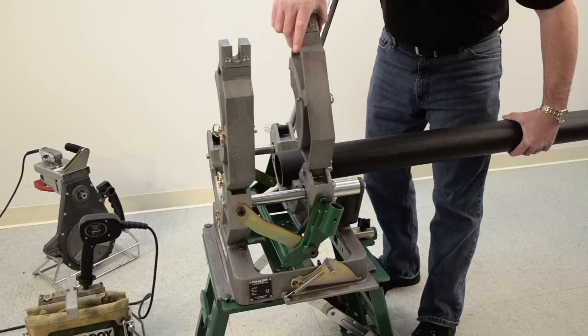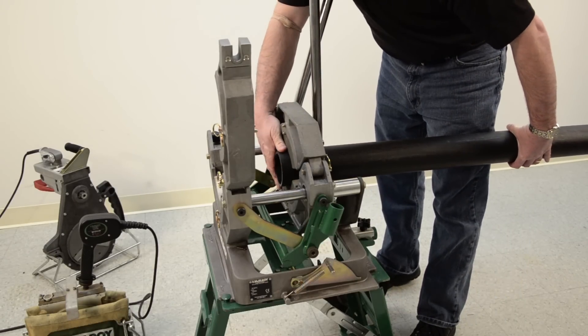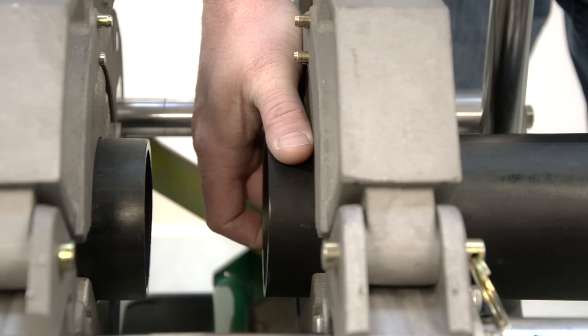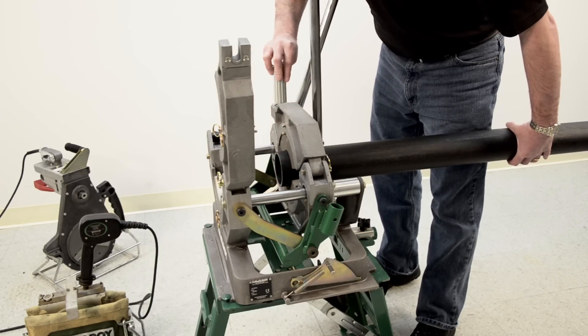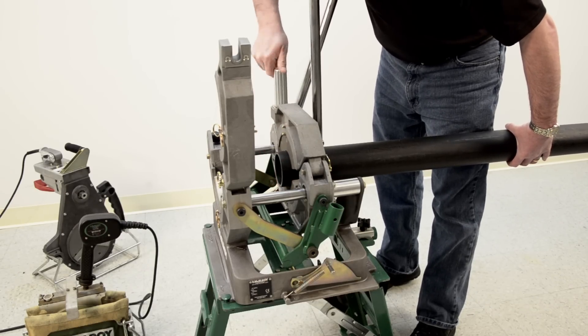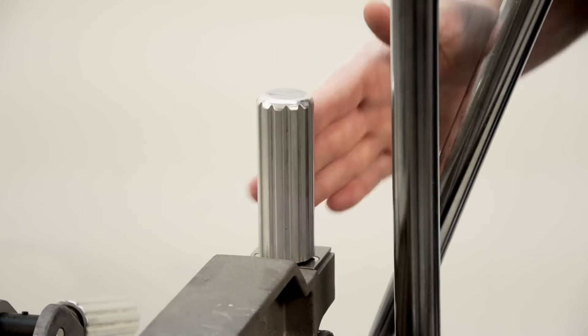With the pipe as level as possible, feed it into the jaws with about a finger's width extending inside the jaws. A finger's width will allow enough material to be properly faced off. Once the pipe is set into position, use the clamp knobs to tighten the jaw around the pipe.